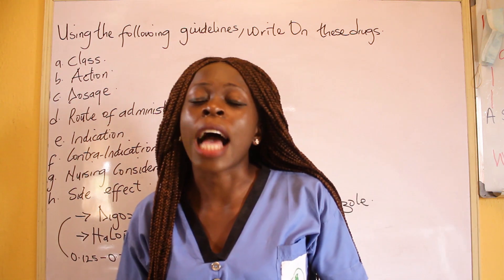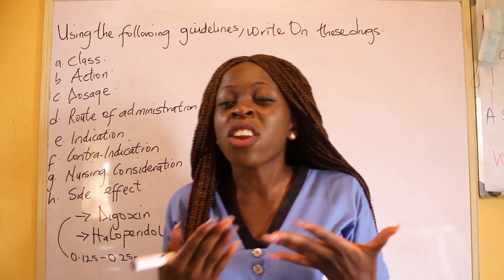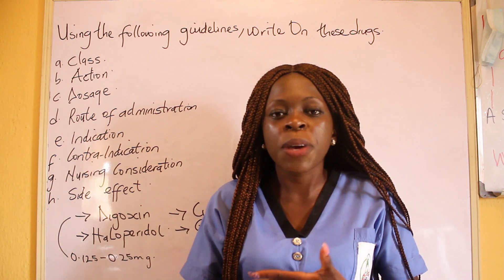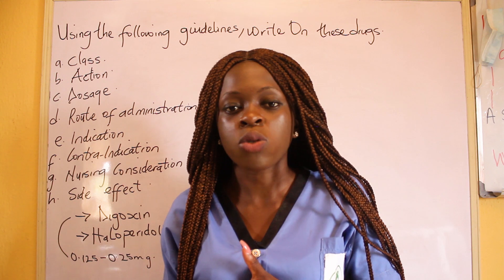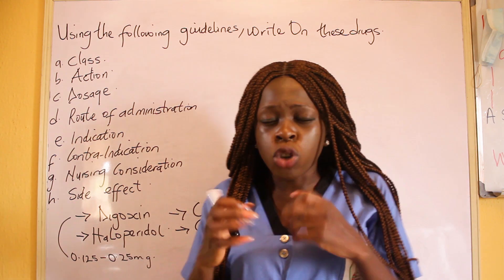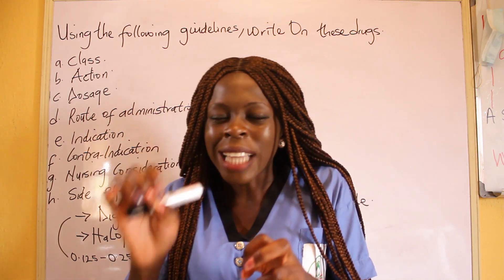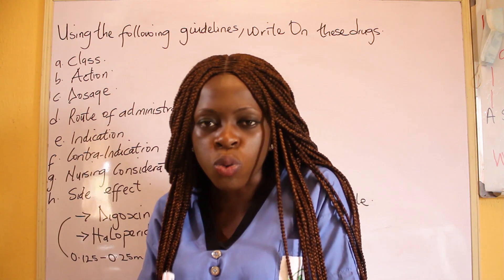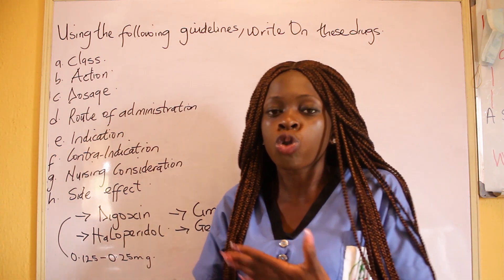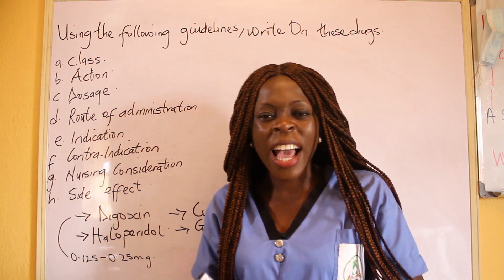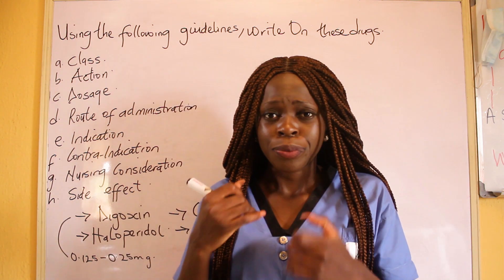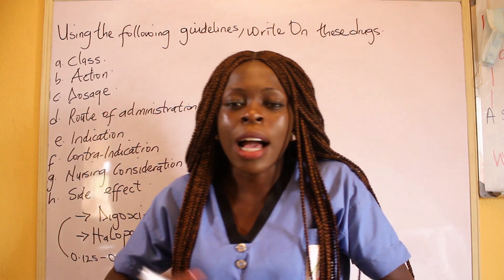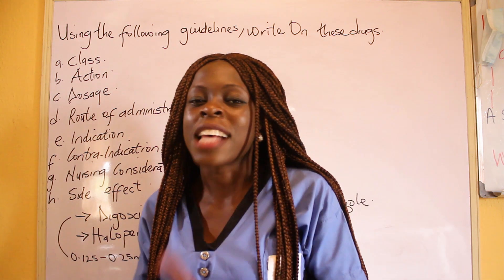Then nursing consideration — what do you consider? Most times we are stuck. Instead of leaving the book blank, you can write that the nurse should make sure it's the right patient, the right route — we know the five rights of drugs: right route, right patient, right dosage. You just need to make a sentence that the nurse should make sure the drug is given at the right time to the right patient through the right route. So in a case where you don't know the specific consideration, you can form a sentence using the five rights of drugs as your nursing consideration.